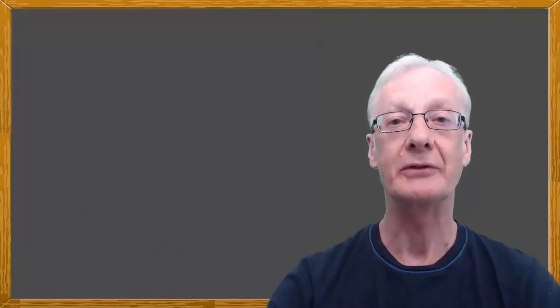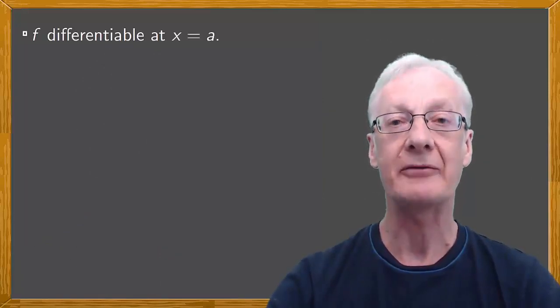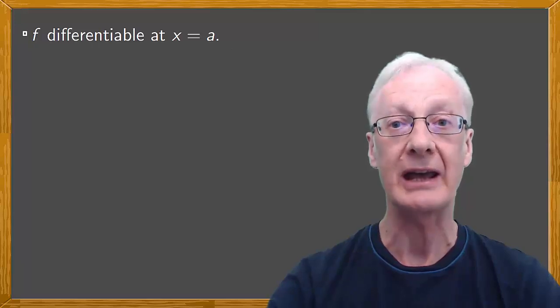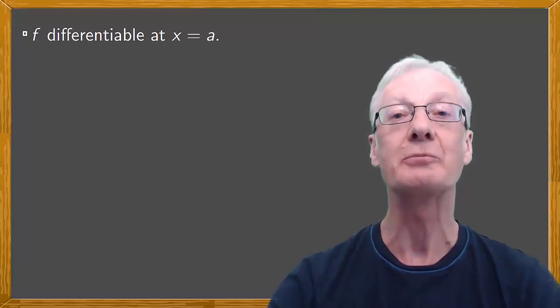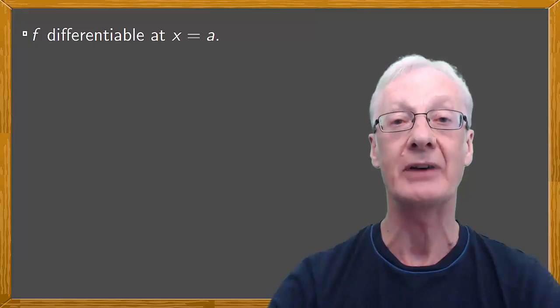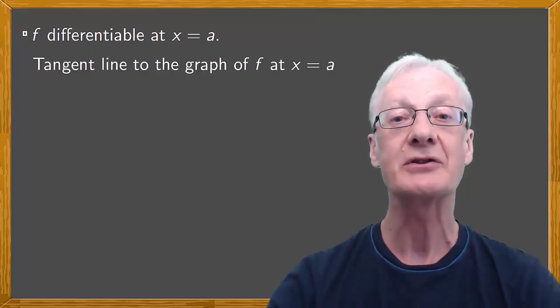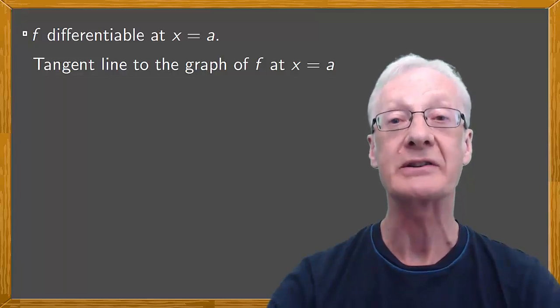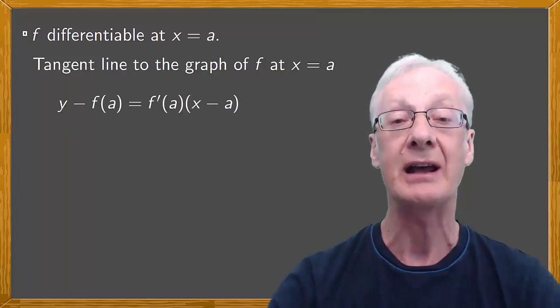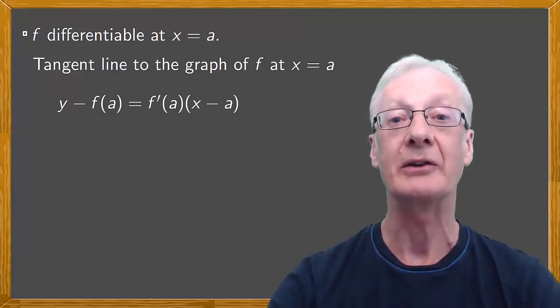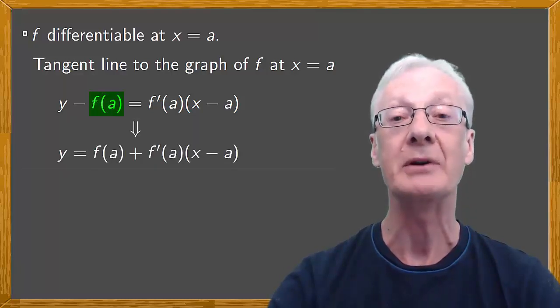First, a quick recap of derivatives. If we have a function f that's differentiable at a point x equals a, then the derivative of f measures the slope of the tangent to the graph of f at x equals a. For this tangent to the graph of f where x equals a, we can say that y minus f(a) is equal to f'(a), that's the derivative of f at a, multiplied by x minus a. Or moving f(a) to the right hand side, y equals f(a) plus f'(a) multiplied by x minus a.